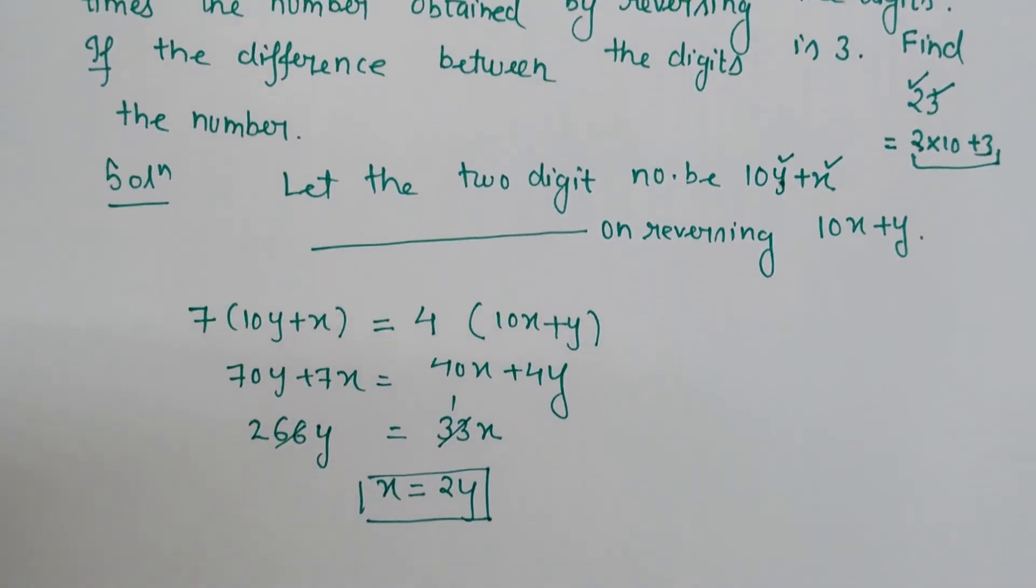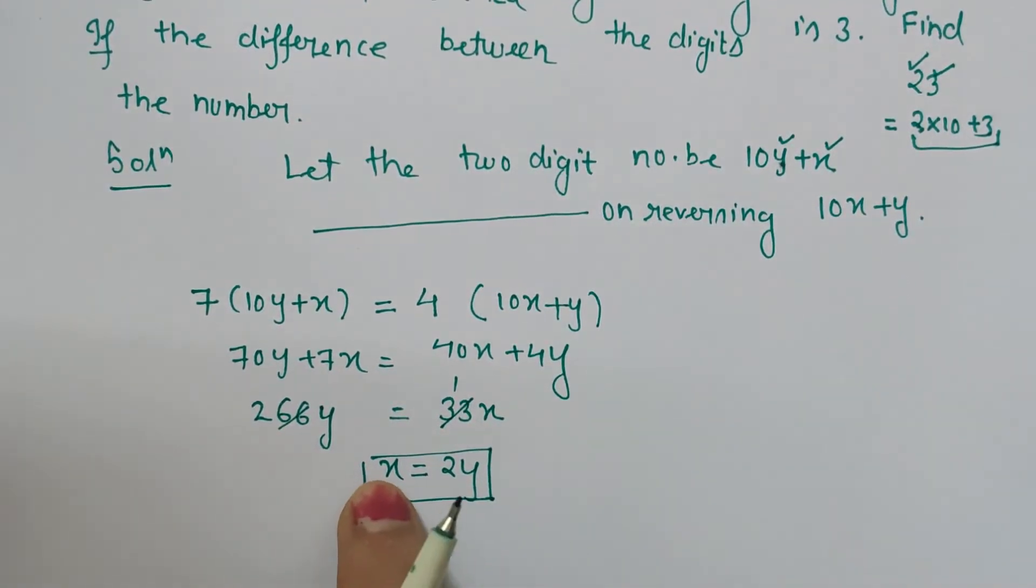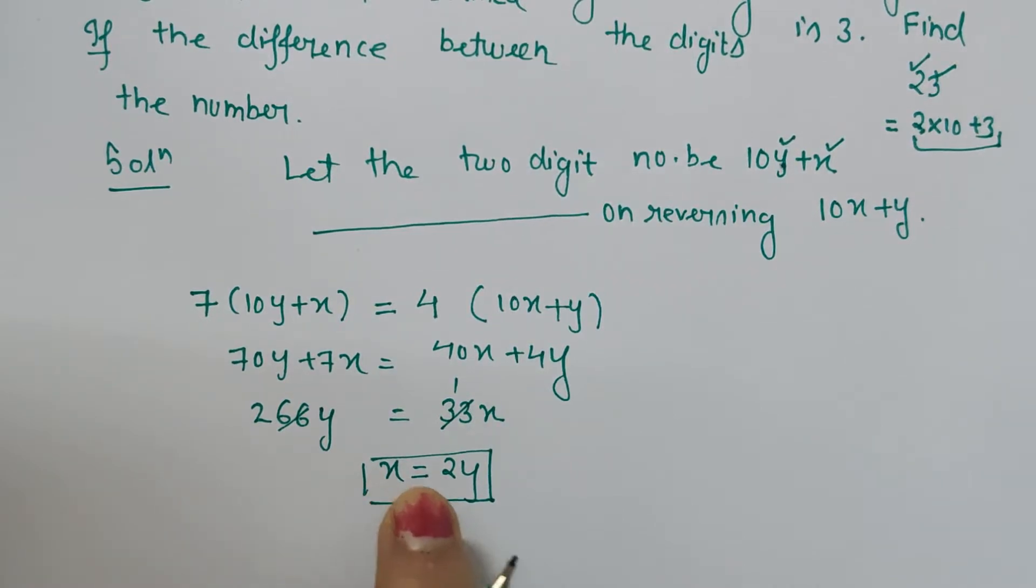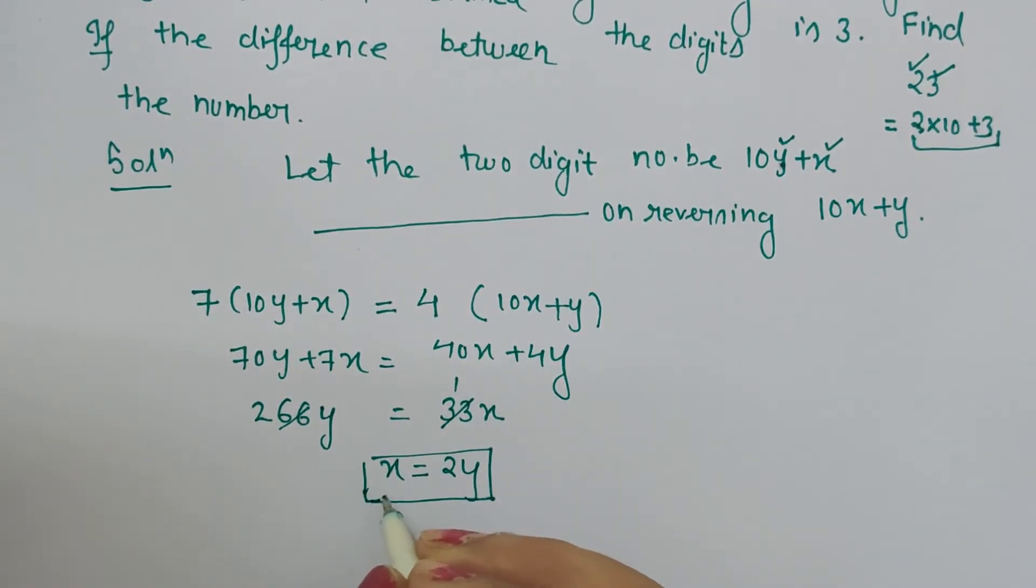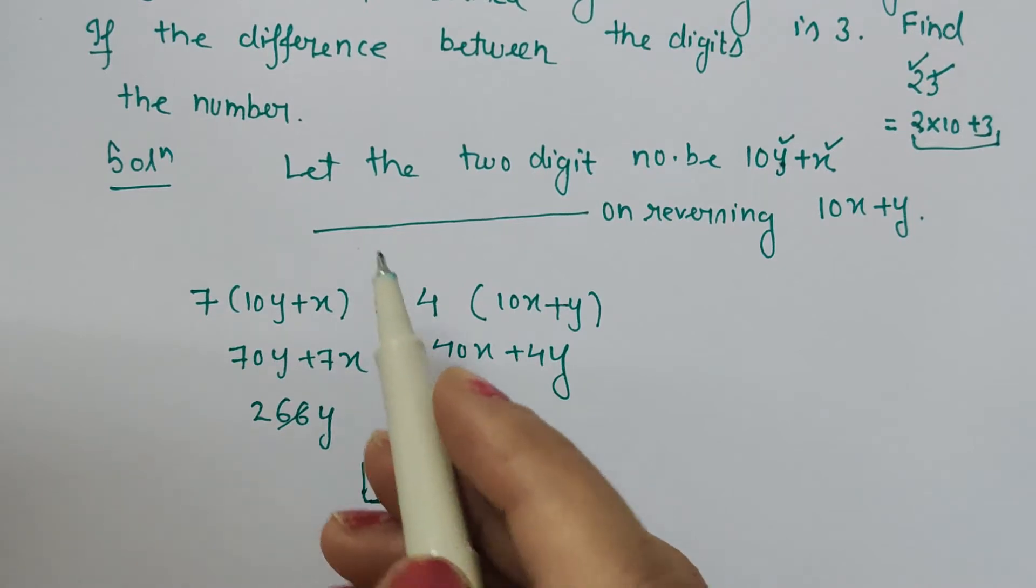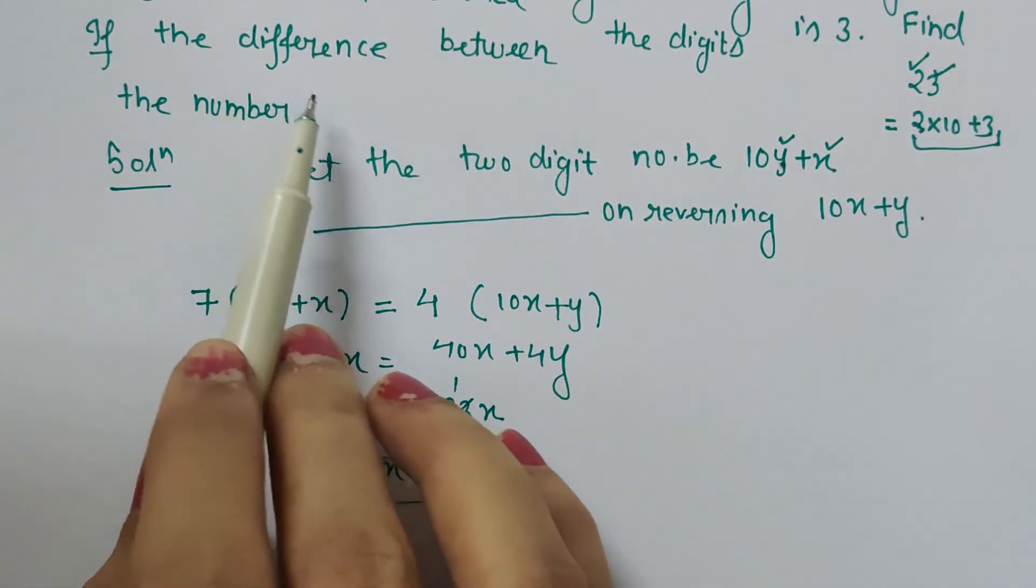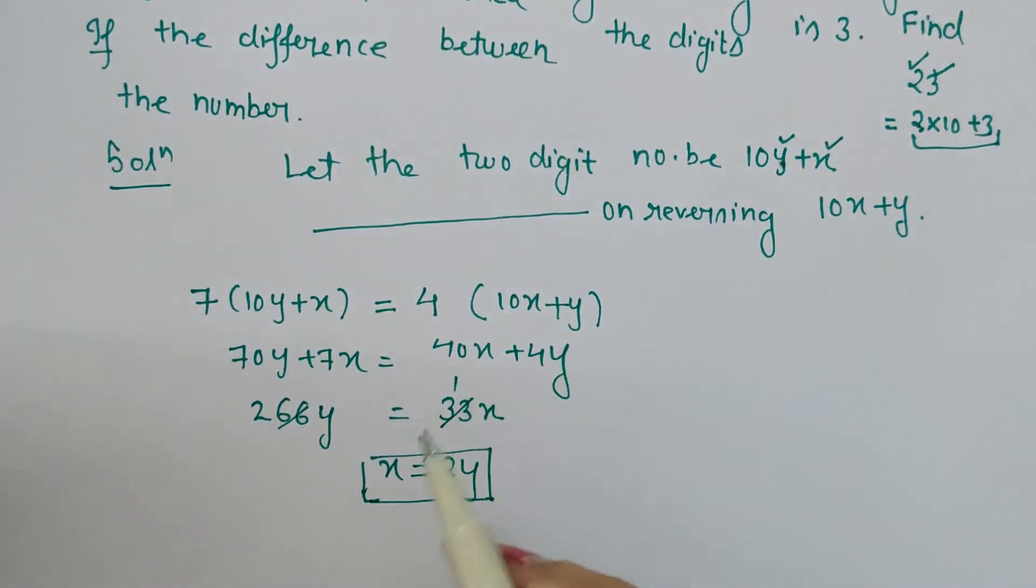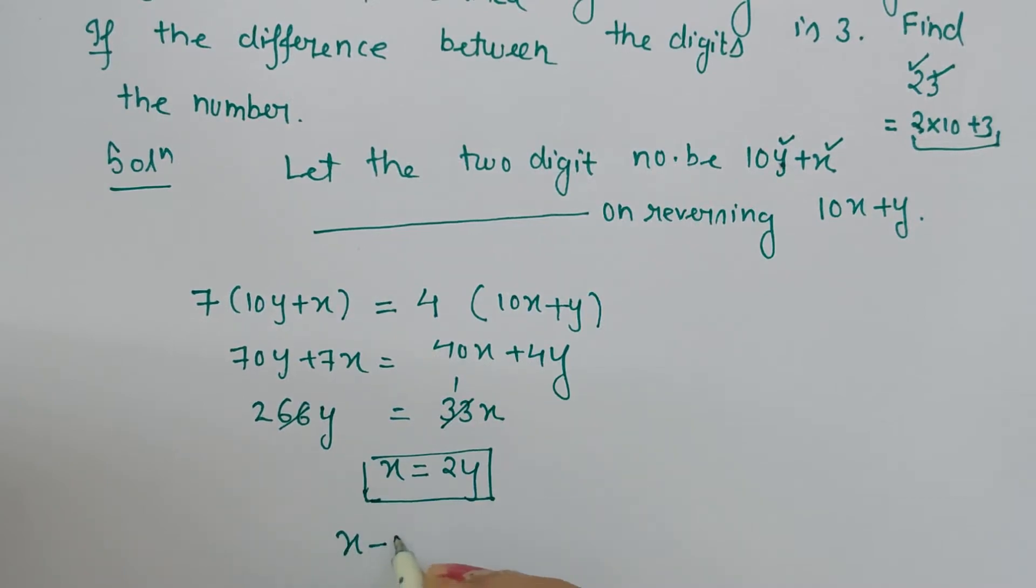What does it mean? It means that the unit place digit is greater than y because unit place digit is two times the digit at tens place. So this will help us in writing the next equation. In the question is given: if the difference between the digit is three. So obviously from the greater we will subtract the smaller digit. So x is greater, so x minus y is three.